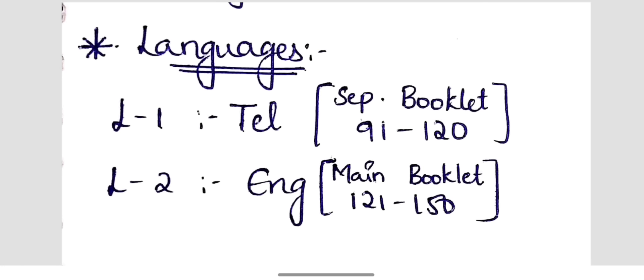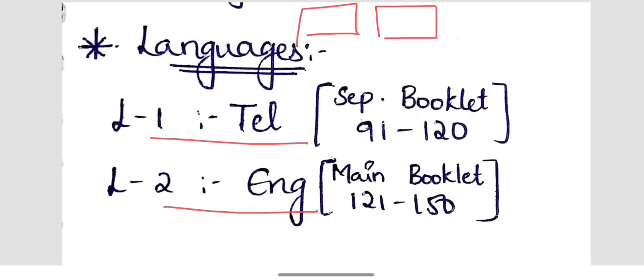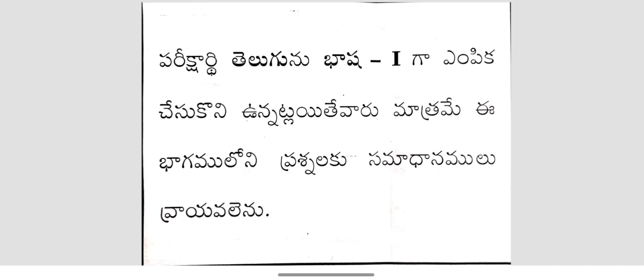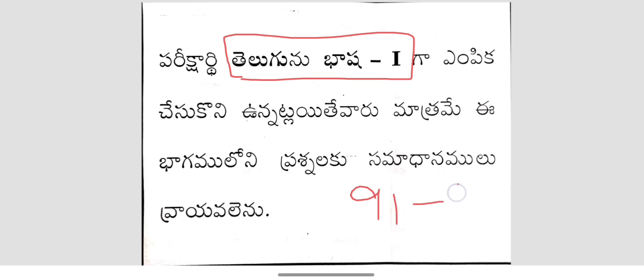You can make a lot of mistakes with languages, so be careful. There are only two cases: either Language 1 is Telugu, or Language 2 is English. You can have two booklets — a main booklet and a separate booklet. In the main booklet, we have all subjects. If you want to choose a separate booklet, you have that option as well.